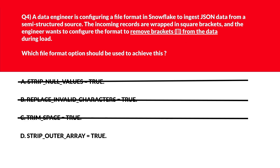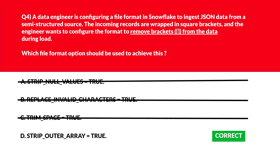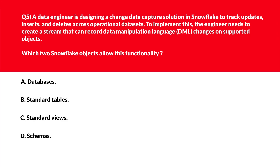We are left with option D: strip_outer_array = true. This removes the outer brackets from the JSON array during file ingestion. If you look at the official documentation, strip_outer_array = true is described as a boolean that instructs the JSON parser to remove outer brackets — that is, the square brackets used in arrays — which is exactly what is required. We'll lock option D as the right answer.